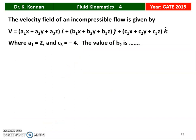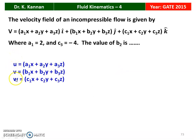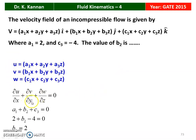Next question, again from the 2015 question paper. The velocity field of an incompressible flow is given by V equal to (A1X + A2Y + A3Z) i-vector plus (B1X + B2Y + B3Z) j-vector plus (C1X + C2Y + C3Z) k-vector. The value of A1 plus B2 plus C3 equal to 0. Substituting A1 equal to 2 and C3 equal to minus 4, B2 equal to 2. The answer: value of B2 equal to 2.